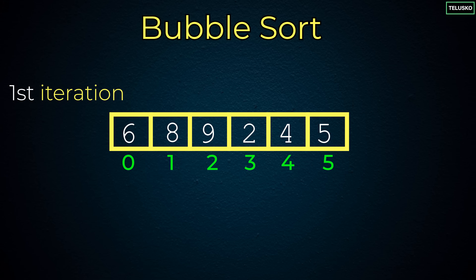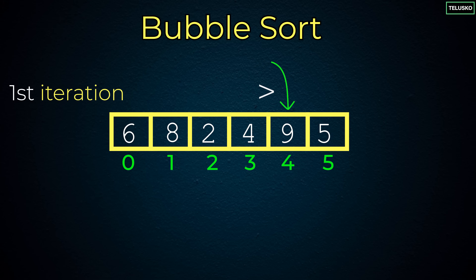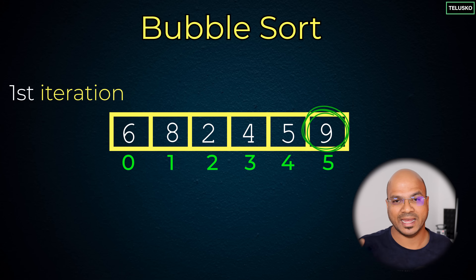After swapping 8 and 6, you shift your pointer to the next 2 values: 8 and 9. The first value is not greater than the second, so you skip — no swapping needed. Then you go for the next 2 values; the first is greater, so you swap. You continue shifting and comparing. After the first iteration, you get the biggest value — 9 — at the end.